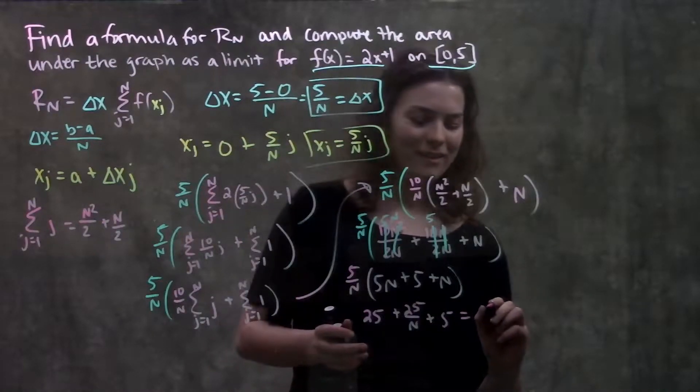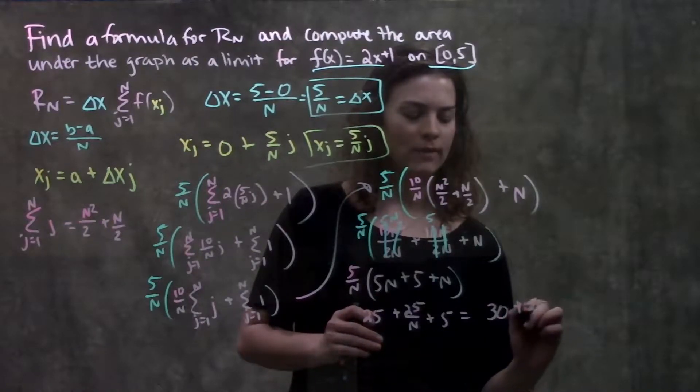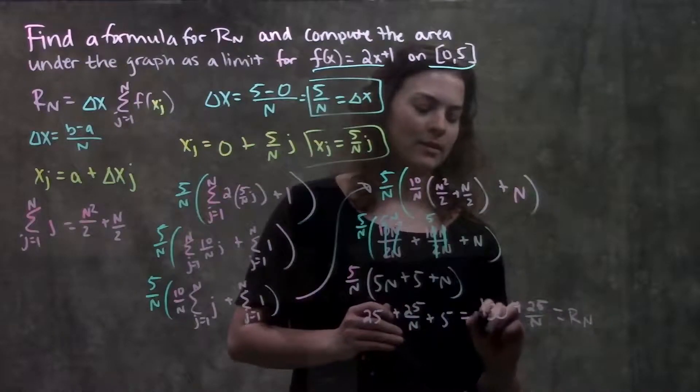And now, last step, combine like terms, 30 plus 25 over n. This is my general formula for Rn.